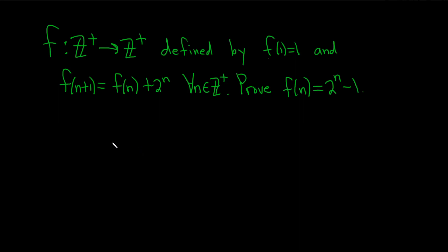In this problem, we're going to do an induction proof. We have a function defined from the set of positive integers into the set of positive integers by a recursive definition. So f(1) = 1, and f(n+1) = f(n) + 2^n for all positive integers. This is called a recursive definition because the function values are defined in terms of previous function values. You could think of it as a sequence — every sequence is actually a function whose domain is a set of positive integers, so this is really a recursive sequence.